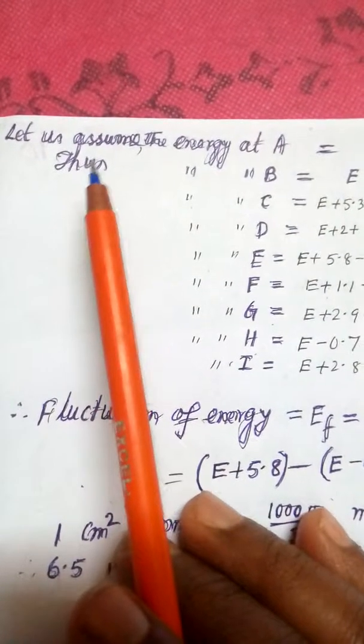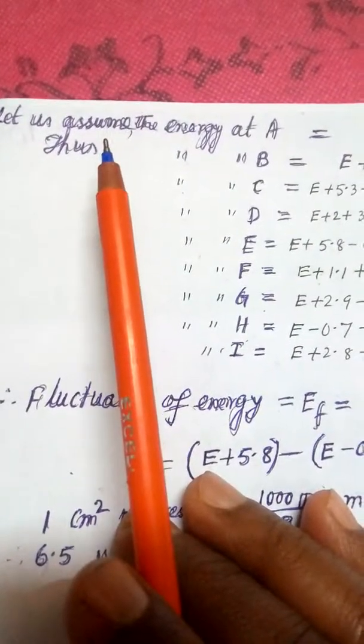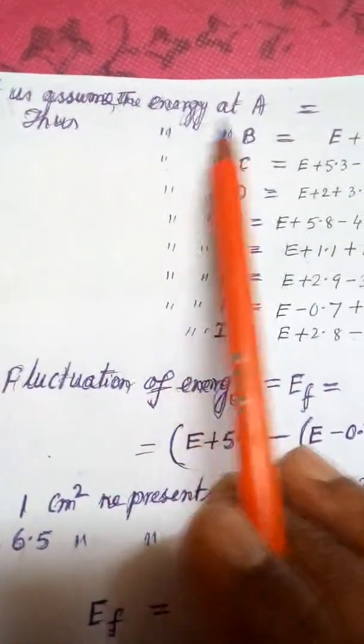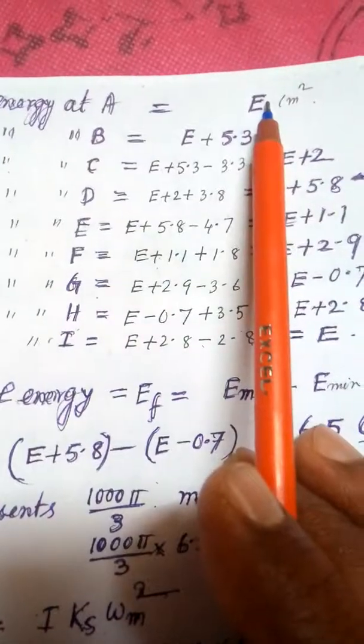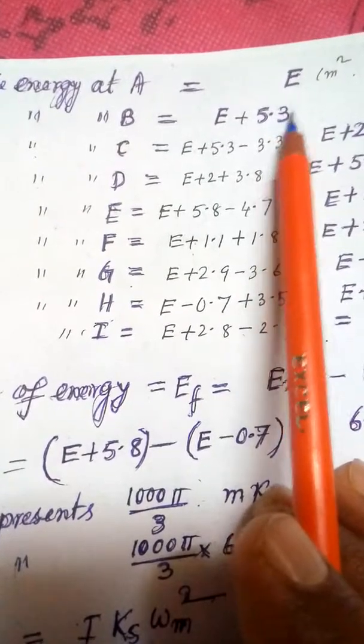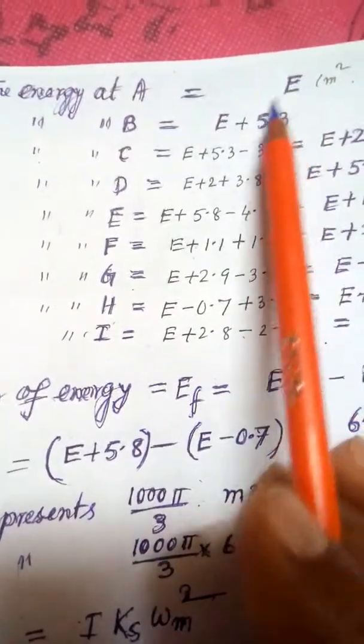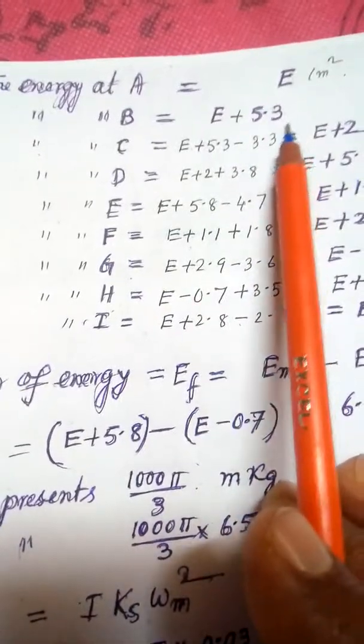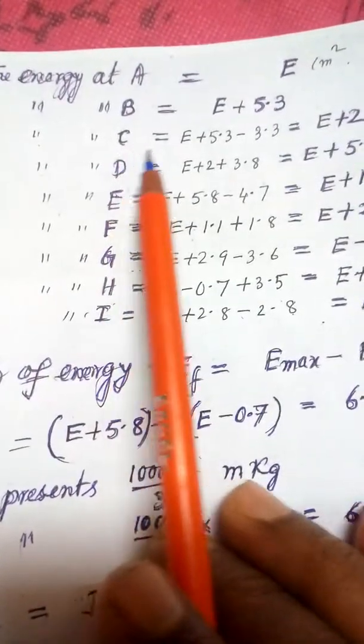Let us assume the energy at A is equal to E centimeter square. So B will be equal to E plus 5.3. This area plus this area is given, plus 5.3. So C will be equal to this plus minus 3.3, which is equal to E plus 2.